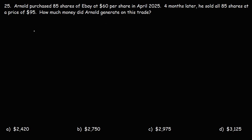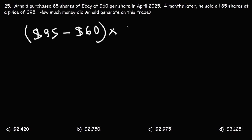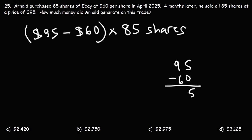So he sold his shares at $95 and he bought them at $60. If we subtract these two numbers, that'll give us the profit that he made per share. So let's subtract 95 by 60. 5 minus 0 is 5, 9 minus 6 is 3. So his profit is $35 per share.